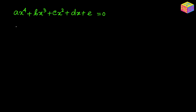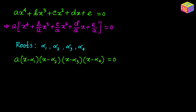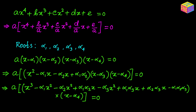Let's suppose we have a quartic equation like this. If we take out a as a common factor we can rewrite the equation. Now let's assume that the roots are alpha sub 1, alpha sub 2, alpha sub 3, and alpha sub 4. Using the factor form we rewrite the equation with four factors. Now let's try to multiply the factors one by one — first the first two, then the bigger factor with the next one, and finally the last factor.